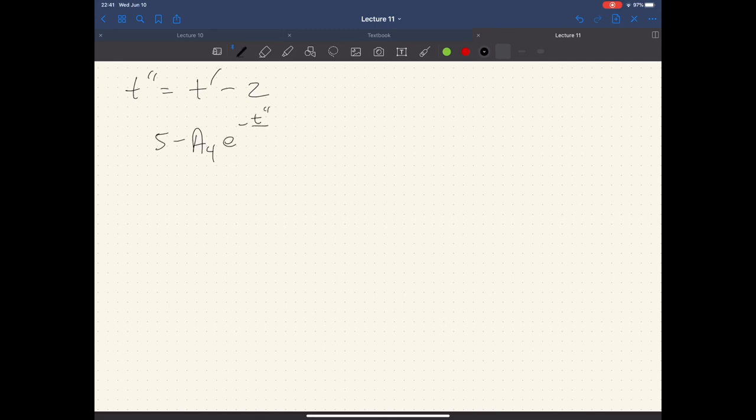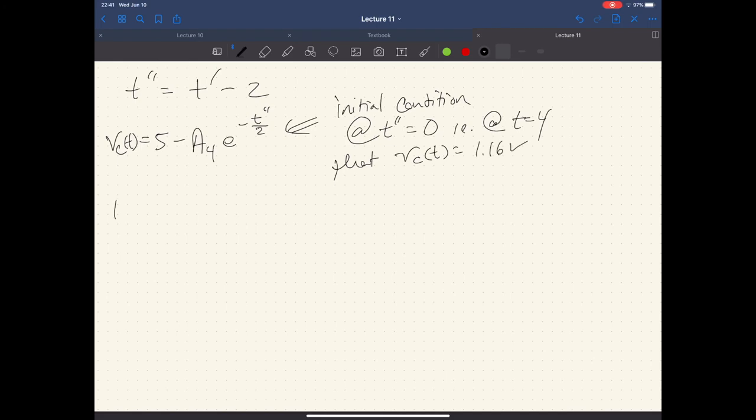We have this equation. Now, we've derived it twice or three times already, four times. Maybe if you count all the stuff previous and more, if you count the homework, but this is what you end up with when you do the ODE solving for this. And then we have the initial condition at T double prime equals zero, i.e. at T equals four, that our voltage is equal to 1.16 volts. So with that in mind, we say 1.16 volts is equal to 5 minus A_4 e to the minus T double prime. This is at zero divided by two. This goes to one overall. And we're left with A_4, which ends up just being equal to 3.84.